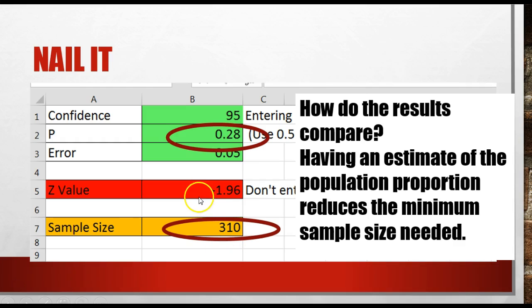They usually follow up and say how do the results compare? Well, if you have an estimate of the population proportion, it reduces the minimum sample size needed.